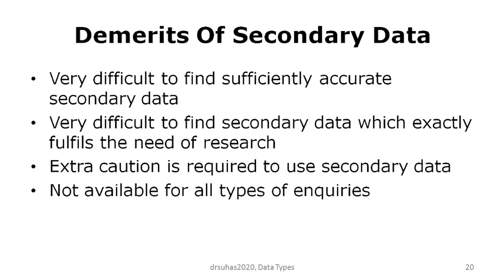This concludes the discussion on the important types of data. We started with qualitative and quantitative data, further classified quantitative or numerical data into discrete and continuous data, and then discussed in detail primary and secondary data. With this, we end this part and will continue in the next part. Thank you.